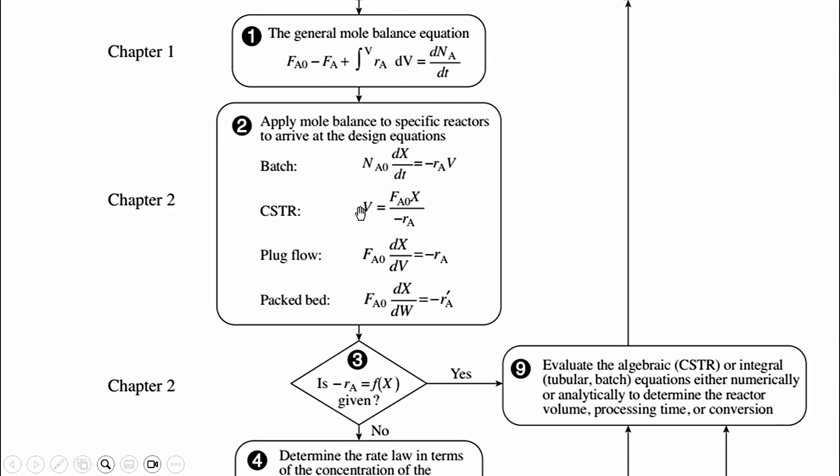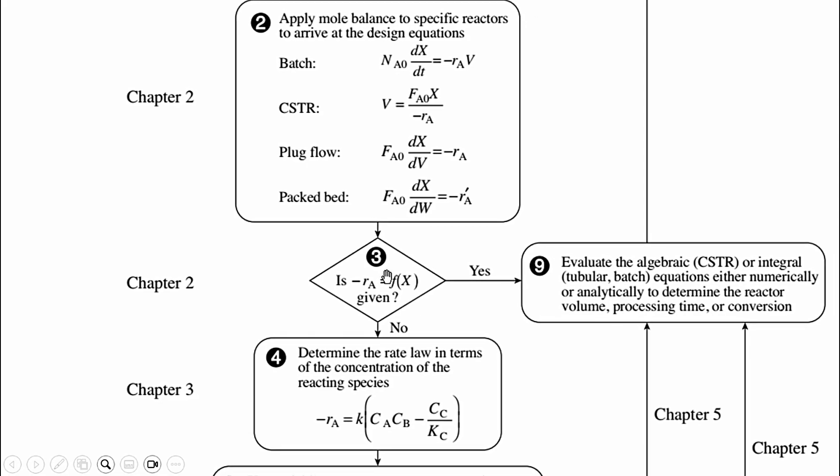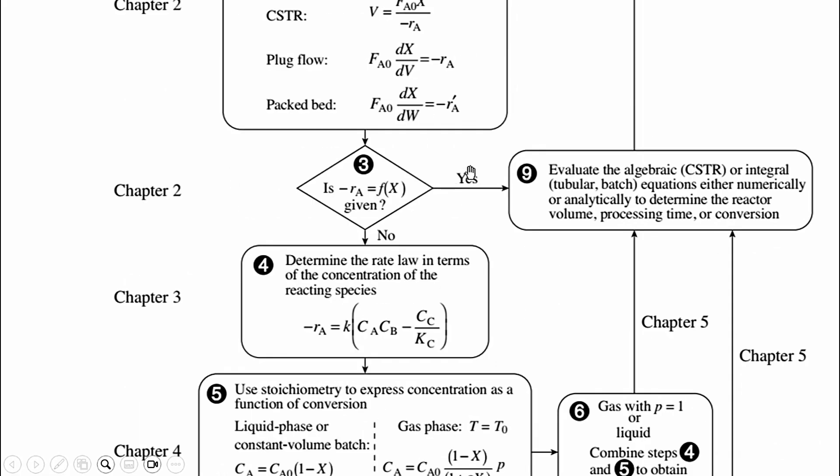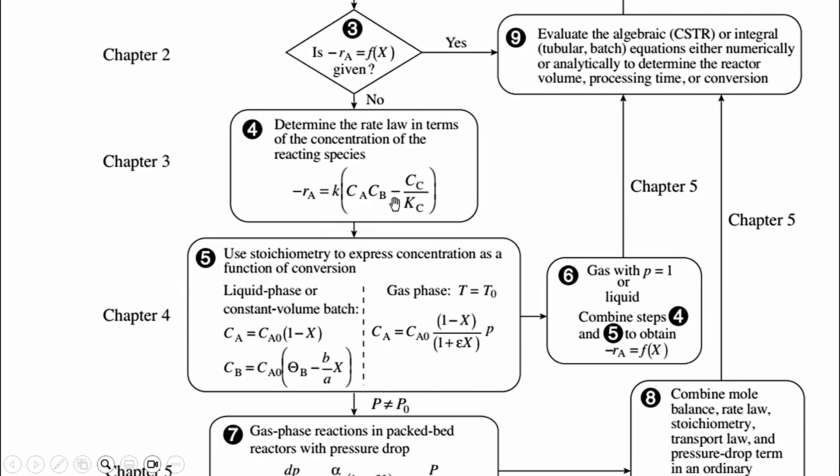Number third, we moved to chapter number three and that states: is minus RA a function of X? If it is yes, then we will move to step number nine. If it is no, then we will move to chapter number three in which we had seen various aspects of rate of reaction for reversible systems, irreversible systems, homogeneous systems, and heterogeneous systems. Accordingly, we will be representing one equation: minus RA equals k times CA times CB minus CC/KC, which is the equilibrium constant.